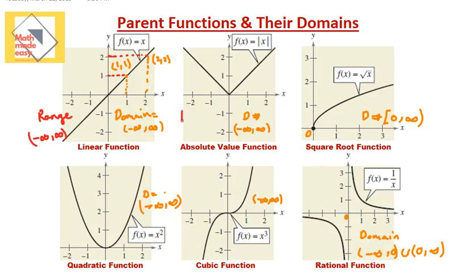For the absolute value function, there are no negative output values. Whatever input you put in — like negative 1 — the absolute value gives you positive 1, and the absolute value of negative 10 is positive 10. So the output is always positive or zero, never negative. The range for the absolute value function starts from zero and goes to infinity, and negative values are not represented on the graph.